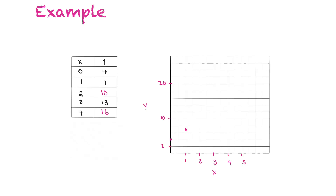When x equals two, y is ten. When x equals three, y is thirteen. When x equals four, y is sixteen. We plot all those points and draw a line to show it's a linear equation.